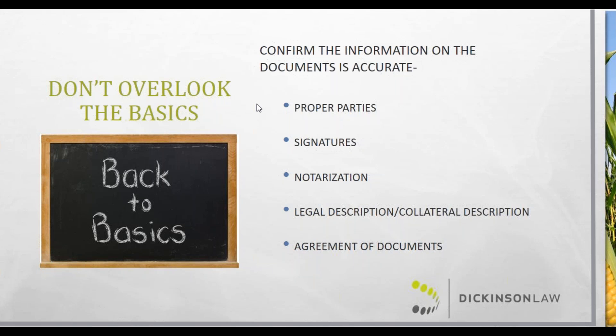That includes making sure, for instance, if you have someone that does business as ABC Plumbing, but their actual entity is XYZ Inc., you want to make sure that you have the entity itself — XYZ Inc. — as opposed to just the DBA name.